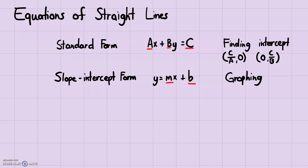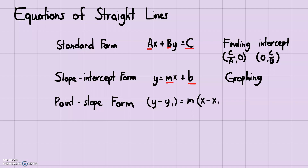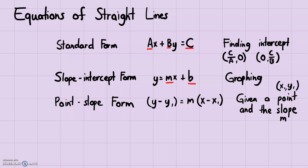The point-slope form is y - y1 = m(x - x1). This is good when you are given a point and the slope and need to find the equation of the line. The point being (x1, y1) and the slope being m — you can plug those in and then simplify to slope-intercept form, since you know what y1, x1, and m are.